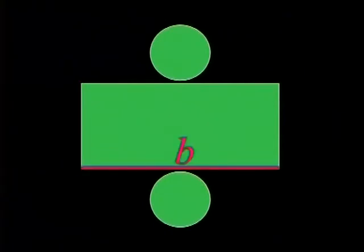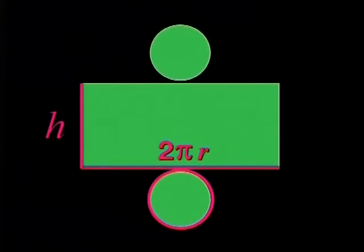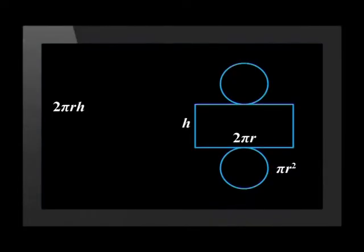If you unfold a cylinder, this part makes a rectangle. This length of the rectangle is the height h of the cylinder, and this breadth of the rectangle is the same as the circumference of the circle. The formula for circumference is 2πr. So the area of the rectangle is 2πr times h.